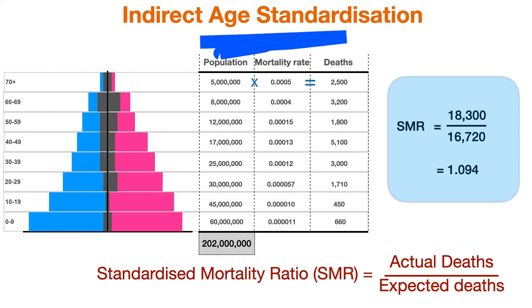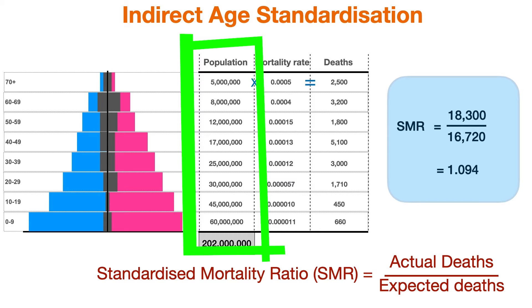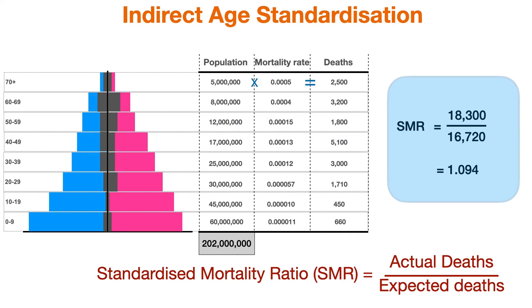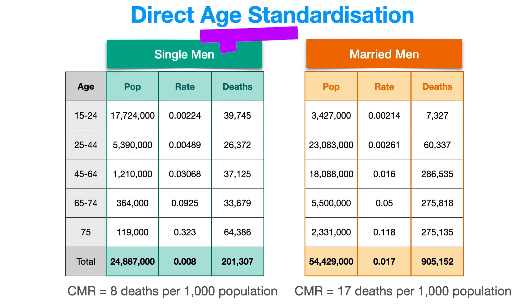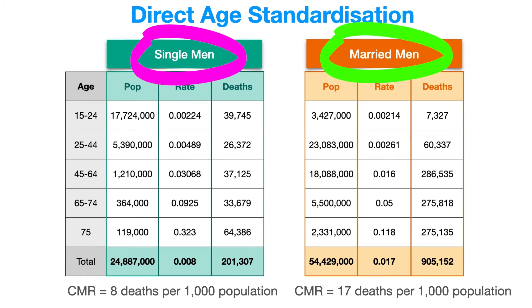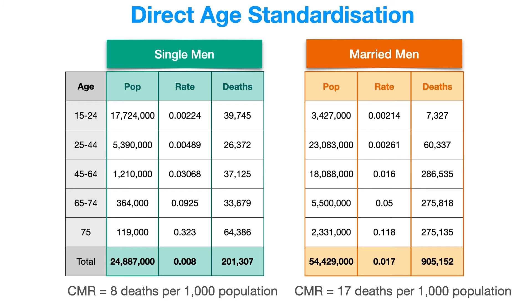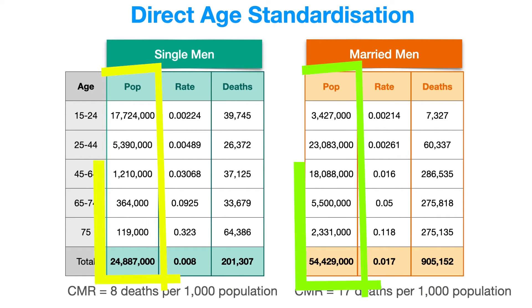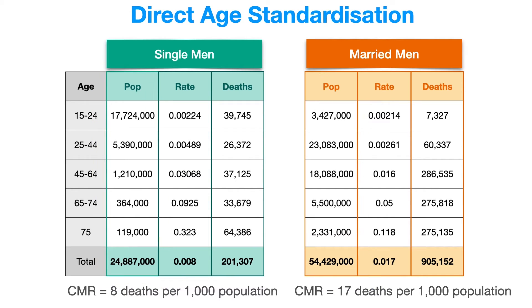Until now we've been talking about indirect age standardization. To do that, we left the population structure alone, dropped in a standard mortality rate, did the calculation, and worked out the expected deaths. Let's now look at direct age standardization — we're going to do something slightly different. Now we're going to compare the mortality rates of single and married men. This time, instead of substituting in a standard mortality rate, we're going to keep the mortality rates of the two populations we're comparing and drop in a standard population structure instead.